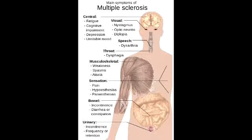What is nystagmus? Nystagmus is a term used to describe fast and uncontrollable movements of the eye.